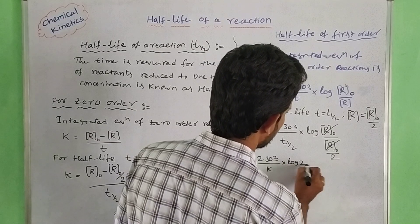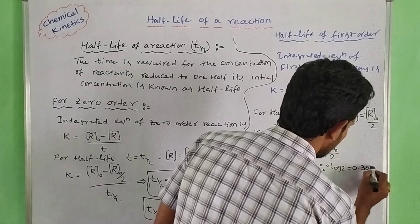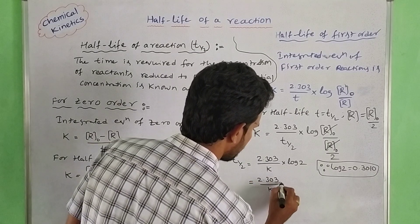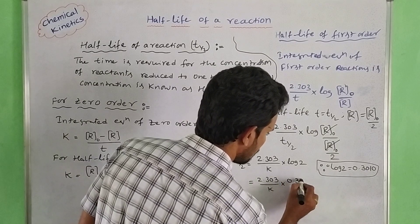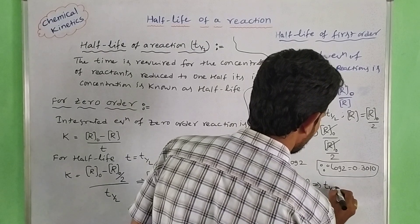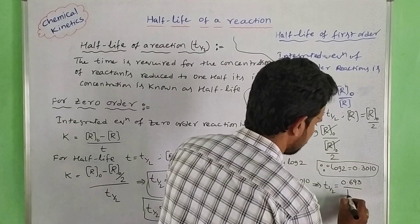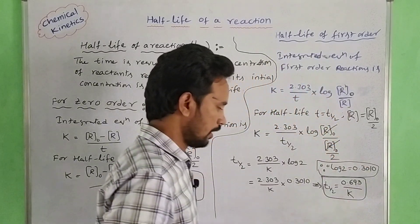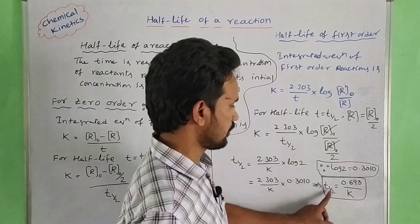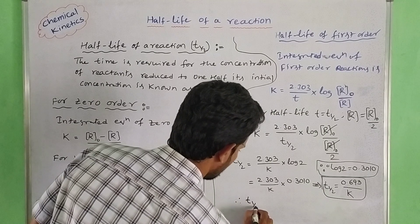So we get K equal to 2.303 by T₁/₂ into log 2. Since log 2 equals 0.3010, multiplying 2.303 by 0.3010 gives 0.693. Therefore T₁/₂ equals 0.693 divided by K. This is the first-order half-life equation. Here T-half is constant — 0.693 is constant and K is constant — so the half-life of a first-order reaction is independent of the initial concentration.